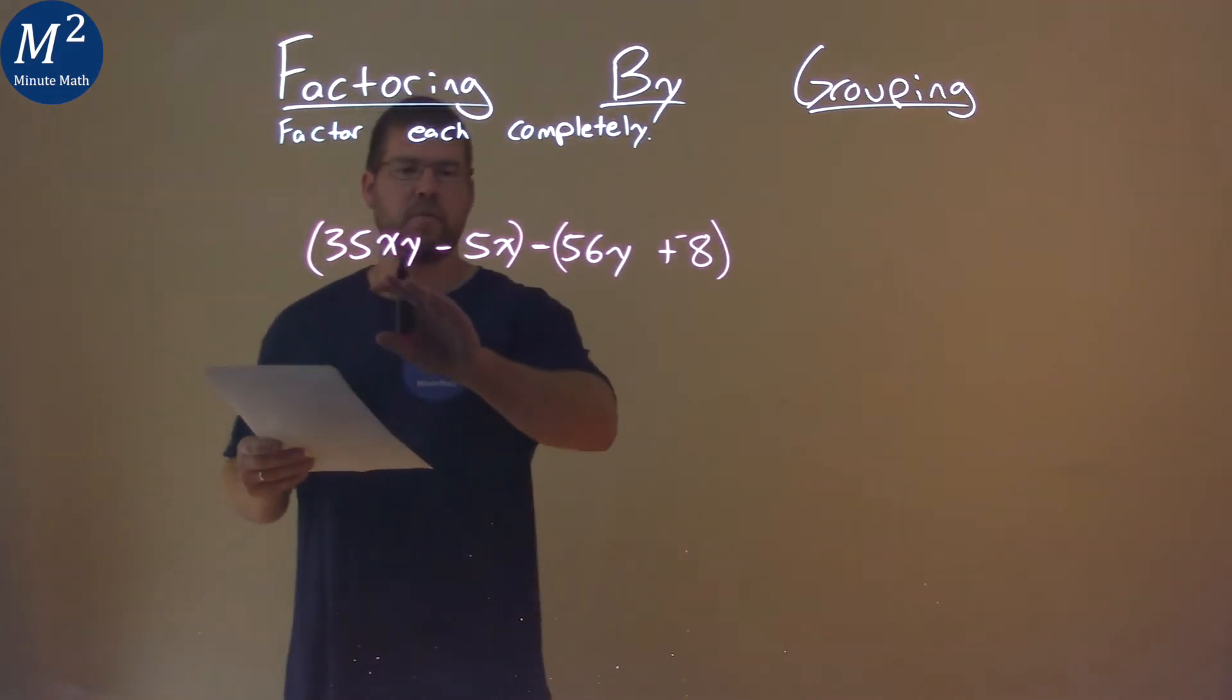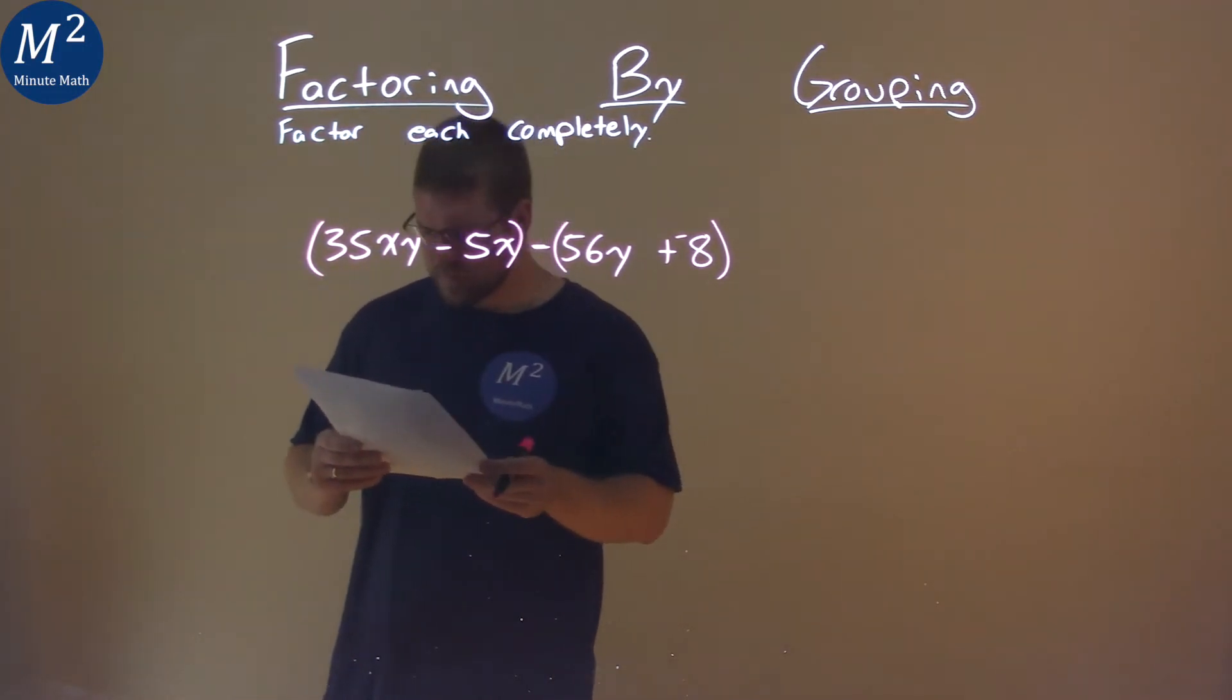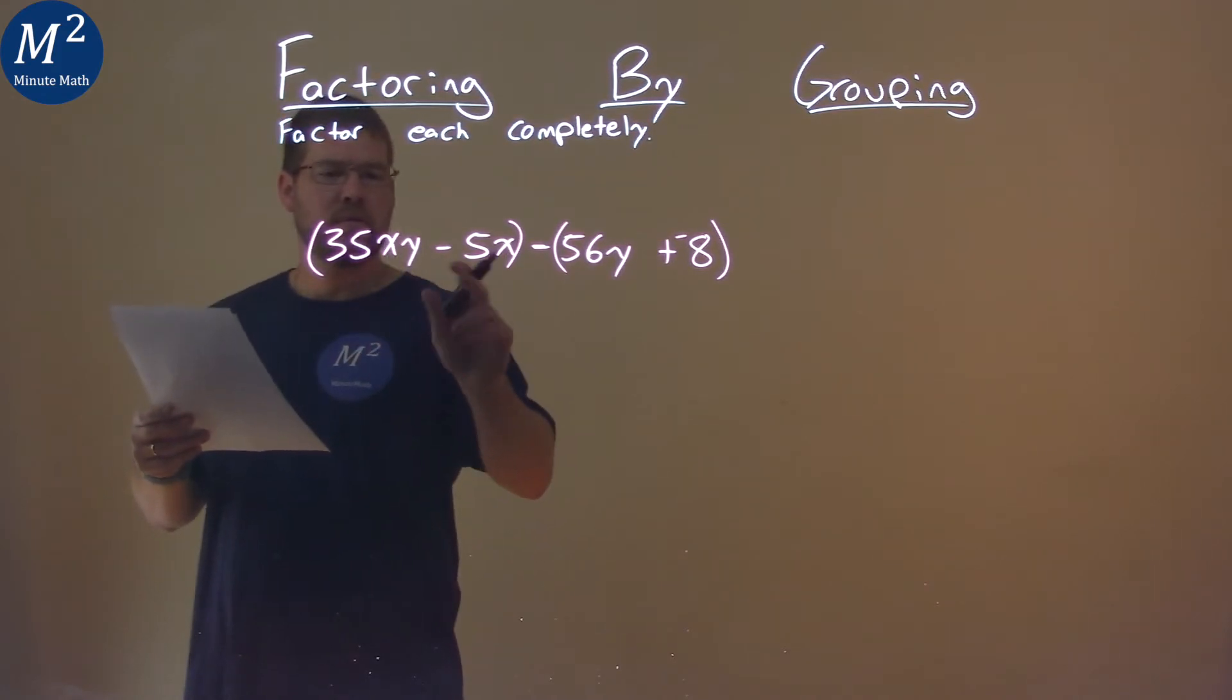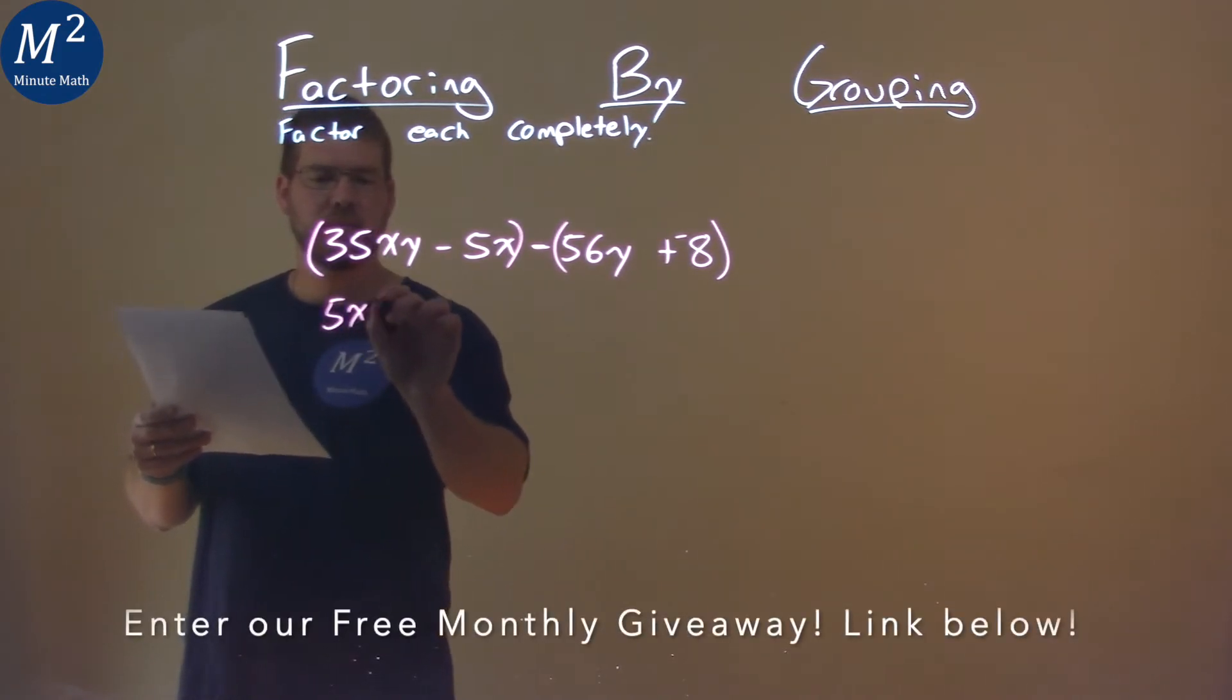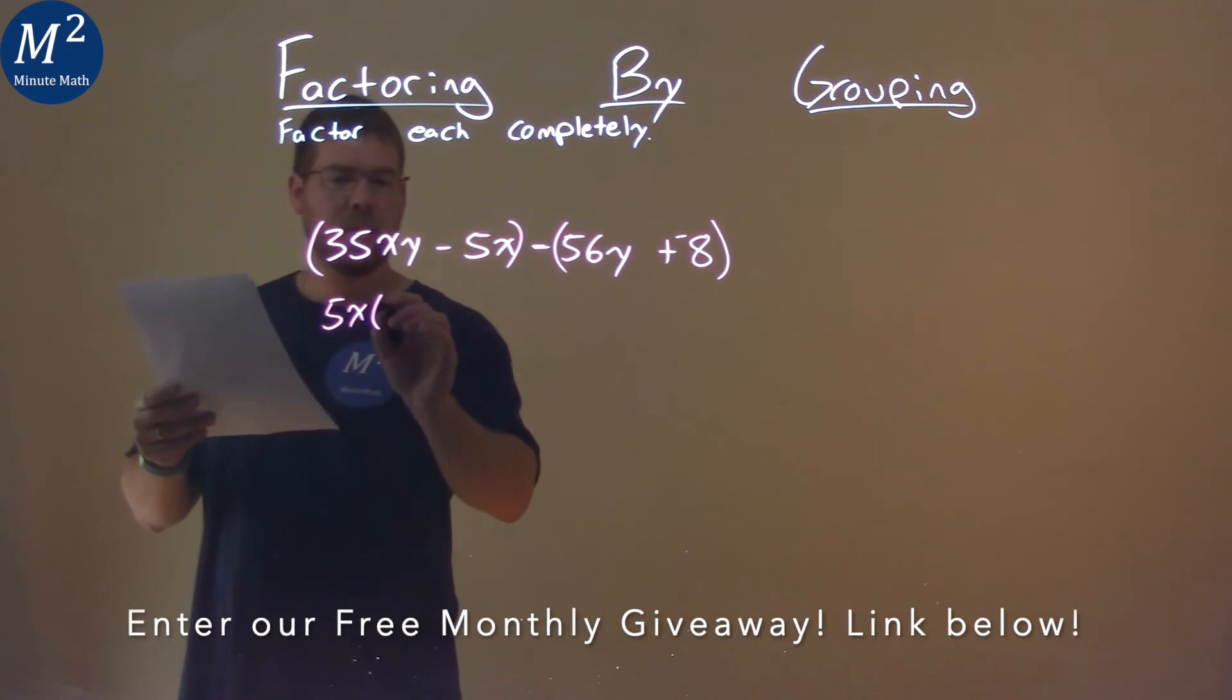Now let's pull out a common term from both parts. A 5x is in both parts here. I have a 5x, and so I'm left with, by pulling out a 5x,